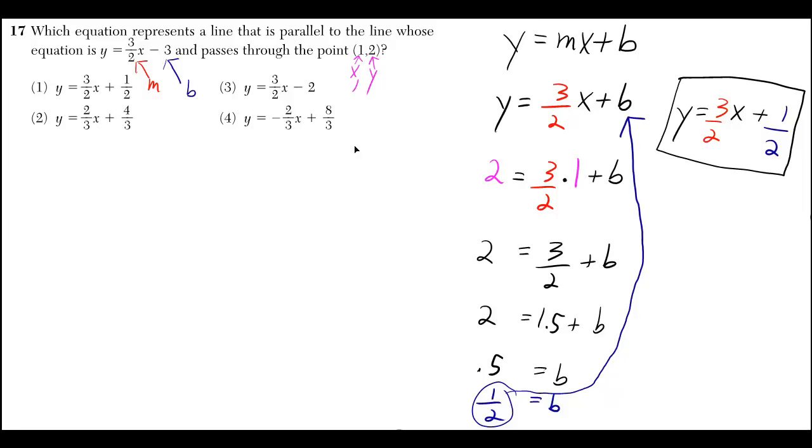Which equation represents a line that is parallel to the line whose equation is 3 halves x minus 3 and passes through the point (1, 2)?